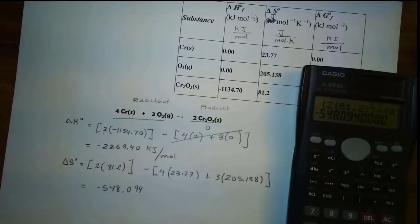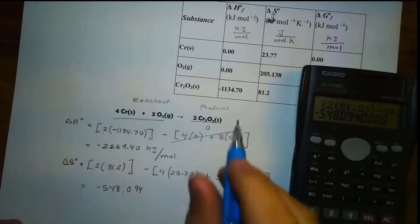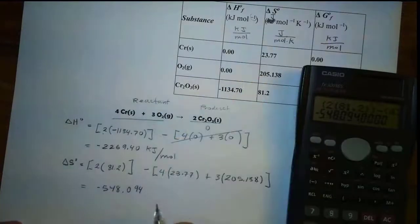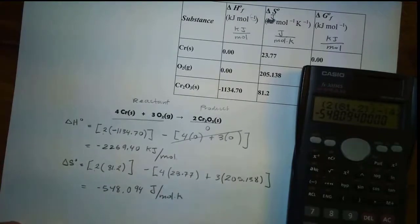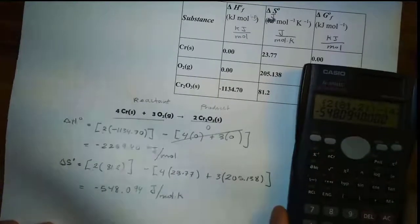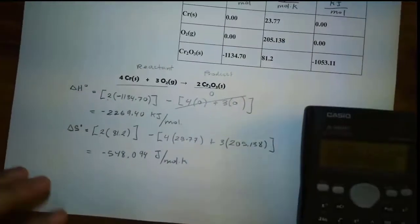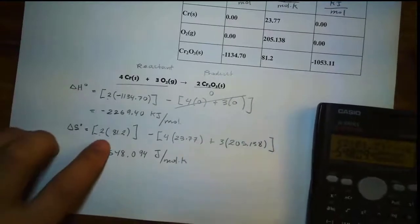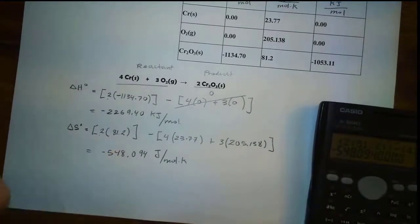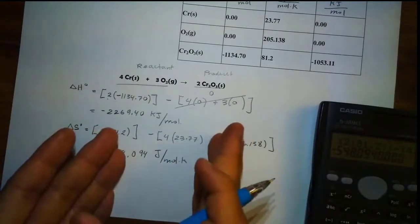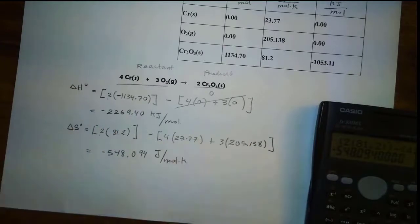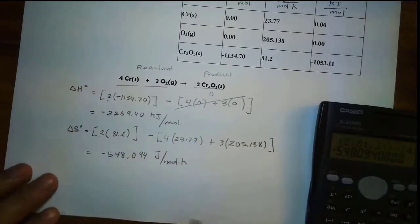The unit for delta S is joule over mole times Kelvin. So that's the beauty of using parentheses — we don't have to simplify it individually. We just plug in directly into the calculator.